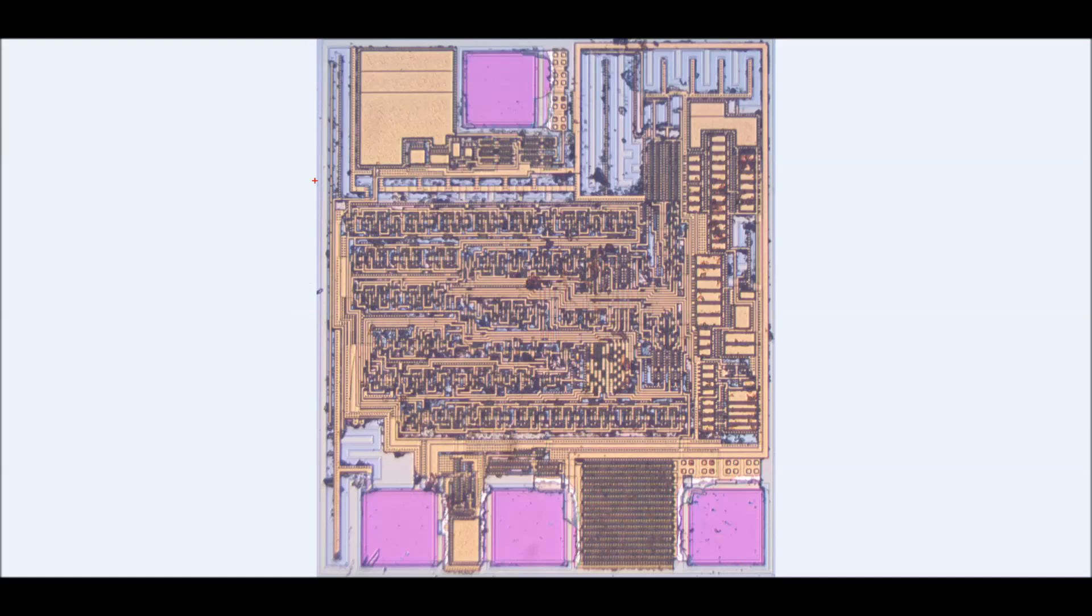So this is the semiconductor once it's removed from its packaging. Let's go to the very top left of the die. We're going to analyze the circuitry up here.